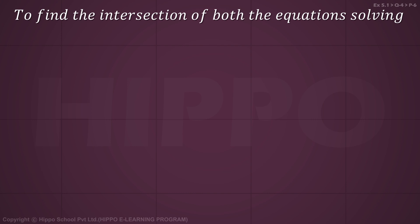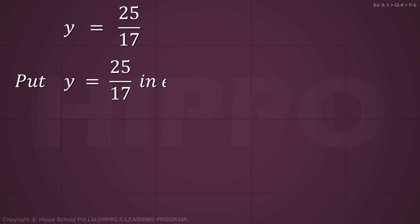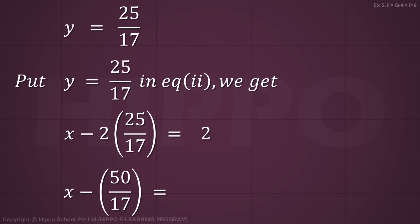Solving equation 1 and equation 2: equation 1 minus equation 2. Multiply equation 2 by 5. Equation 1 is 5x plus 7y equals 35. Equation 2 multiplied by 5 gives 5x minus 10y equals 10. Subtracting: 17y equals 25, so y equals 25 by 17. Now put y equals 25 by 17 in equation 2.